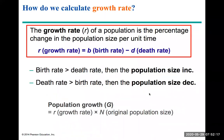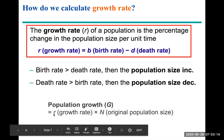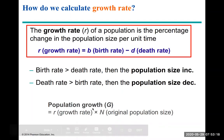The growth rate of a population is the percentage change in population size per unit of time, measured using the formula r equals birth rate minus death rate. As long as births exceed deaths, population size increases; if death rate outpaces births, population decreases. The overall population growth equals the growth rate r multiplied by n, which represents the original population size.